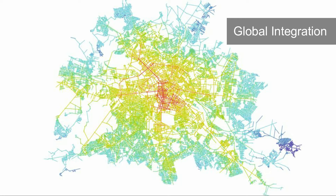A global integration study determines how spatially integrated a street axis or axial line is in comparison to all other streets in the system. The fewer the changes of direction or syntactic steps required from streets to reach all places in the system, the higher the street global integration value. In contrast, roadways that need many directional changes to reach all other places in the urban system tend to have poor global integration scores.